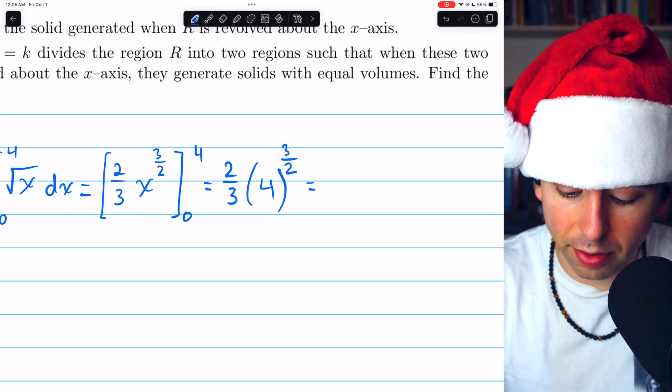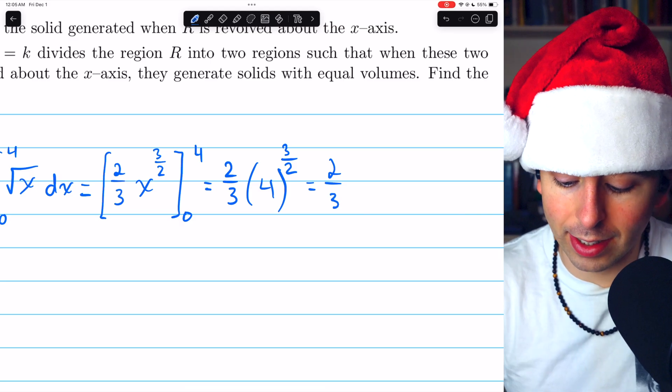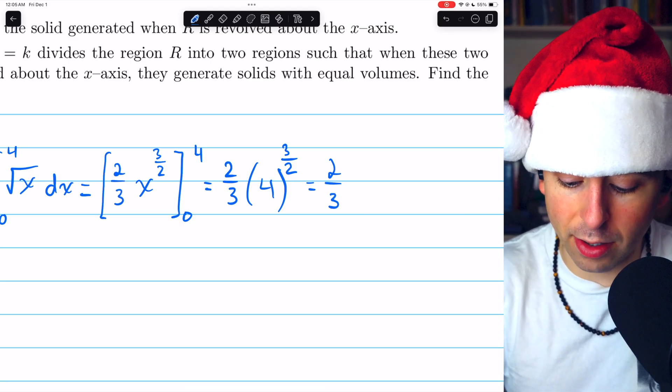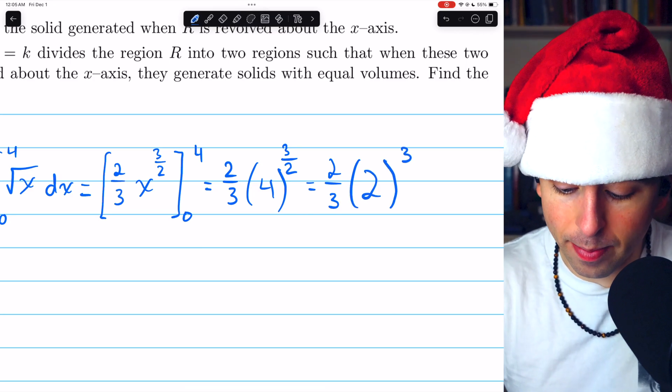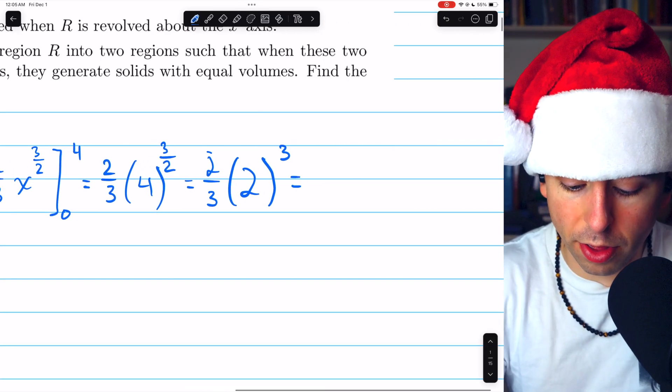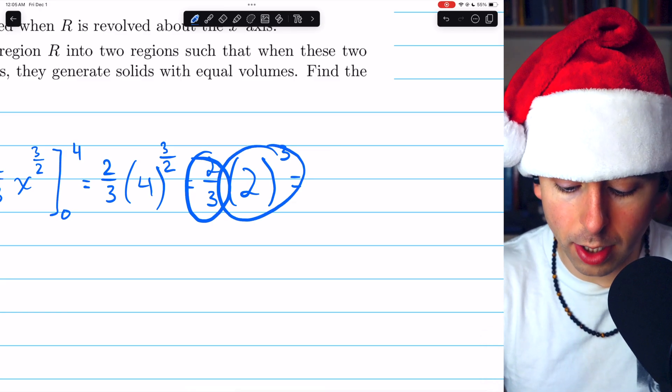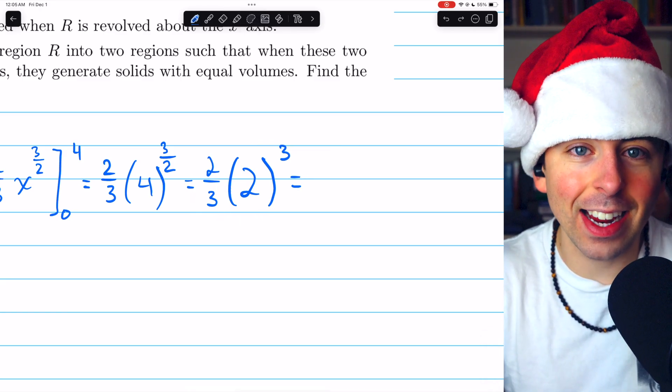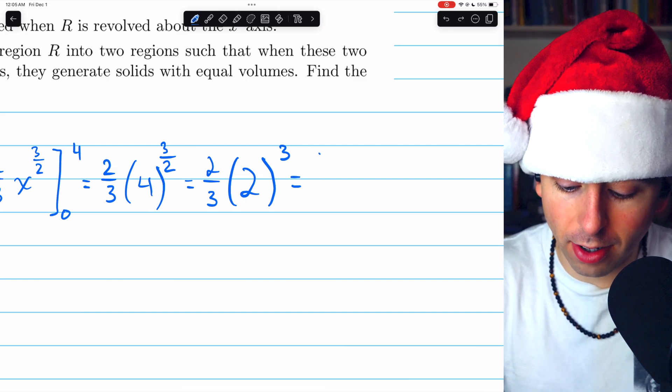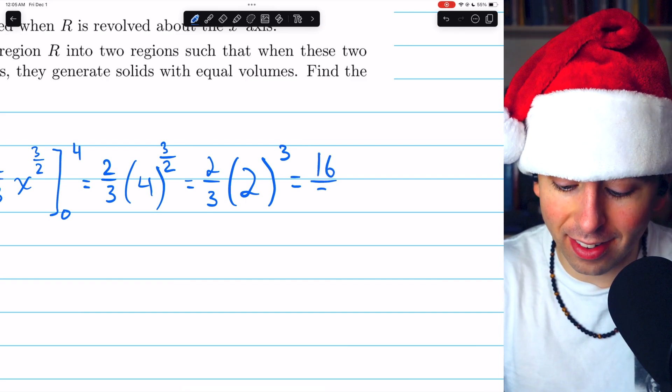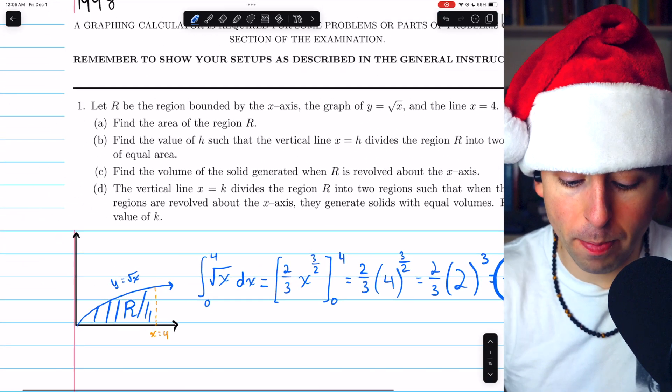The order, of course, doesn't actually matter. That's just the way I like to think of it. So first, we take the square root of 4, which is 2. And then we have to cube that. So this ends up being 2 thirds times 2 cubed. 2 cubed is 8. So it's 2 times 8 over 3. And so the answer is 16 thirds. That is the area. That's the answer for part A.